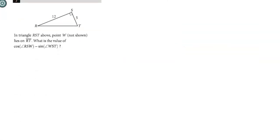Number 7. In RST above, point W not shown lies on RT. What is the value of the cosine of angle RSW minus the sine of WST? Let's put our own W on there. We want the cosine of angle RSW, that's this angle. And then the sine of WST is that angle. Now, what do you notice about these two angles? Let's simplify this and call them A and B. Those two angles add up to 90 degrees. So they are complements.